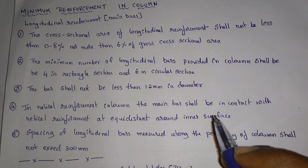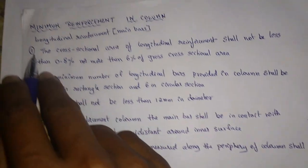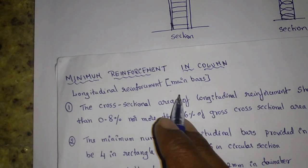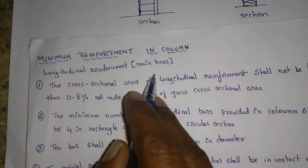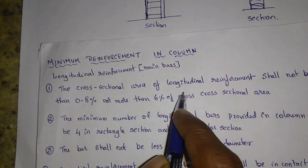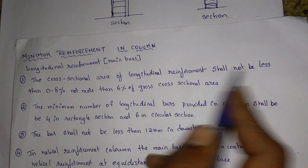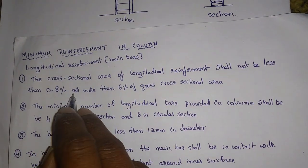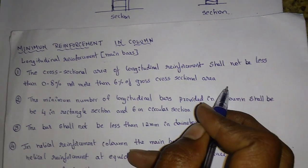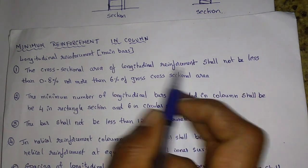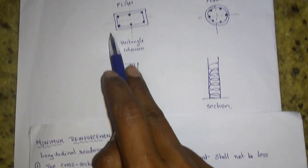Today we will see the minimum reinforcement required in a column. First, we will see longitudinal reinforcement, also called main bars. The cross-sectional area of longitudinal reinforcement shall not be less than 0.8% nor more than 6% of the gross cross-sectional area.